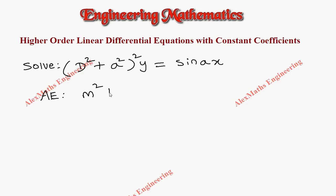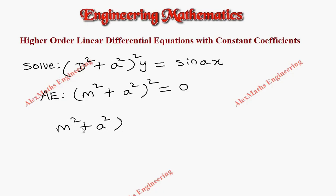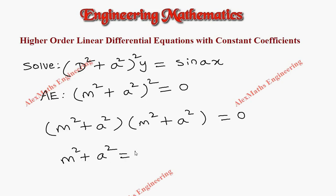m² + a² whole square equal to 0. Since this is a whole square, let's write it as two factors separately. Now by equating both the factors to 0, we get m² + a² = 0 and m² + a² = 0.